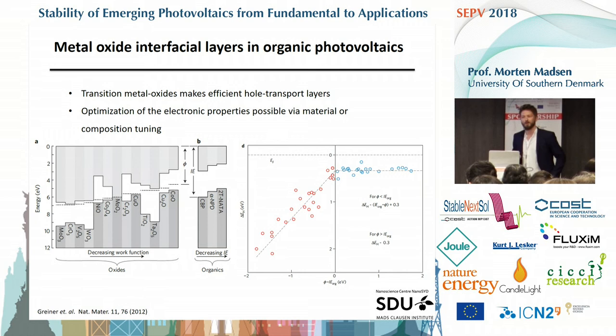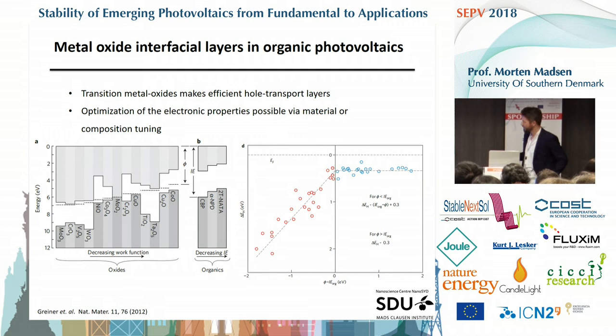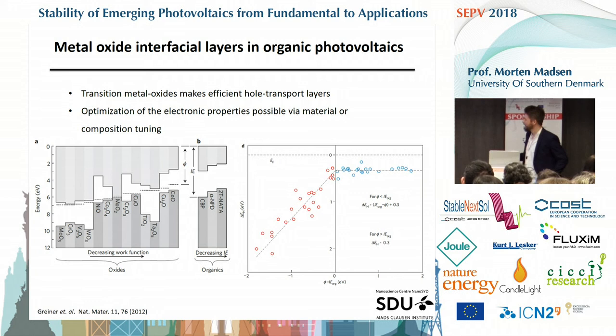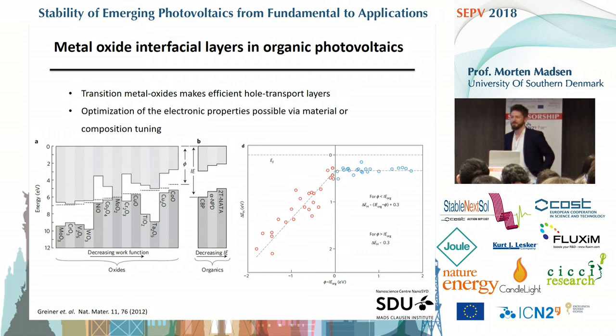If you start out with a low work function of the metal oxide, lower than the ionization energy of the donor material, you have a large offset for carrier extraction and therefore a quite large barrier. This would be the case for metal oxides at this end of the spectrum where the work function is lower than the ionization energy of the organic material. As you move to different metal oxides and increase the work function, you lower the difference. At some point they become equal and you have a minimum offset. Basically, you need a high work function metal oxide that surpasses the HOMO level of the donor material to make efficient hole extraction.